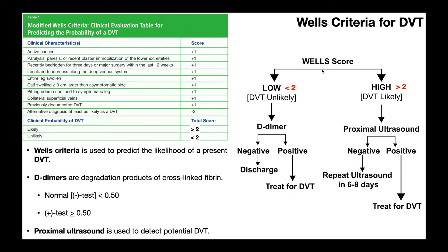Now let's assume we're dealing with a Wells score of at least two, so two through nine — nine being the highest score attainable. Moderate risk is between two and six, and high risk is greater than six, so seven, eight, or nine. If somebody has a score of seven through nine, you don't need further testing — you just assume the person has a deep vein thrombosis and treat with compression wraps and anticoagulants. If the score is between two and six, particularly on the low end between two and four, you'll want to rule it up or rule it out with proximal ultrasound.